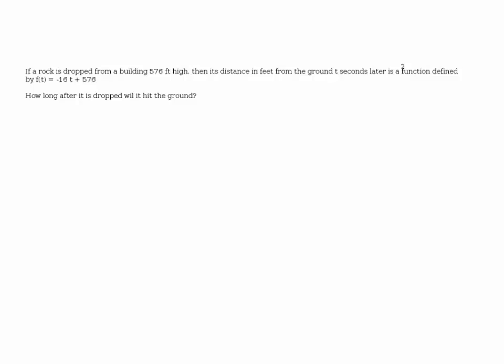If a rocket is dropped from a building 576 feet high, then its distance in feet from the ground t seconds later is a function defined by f(t) = -16t² + 576.